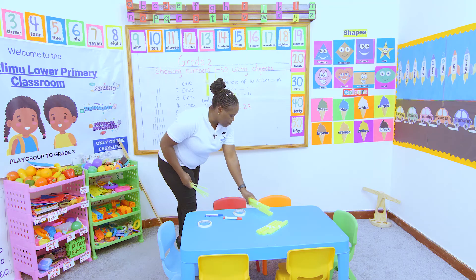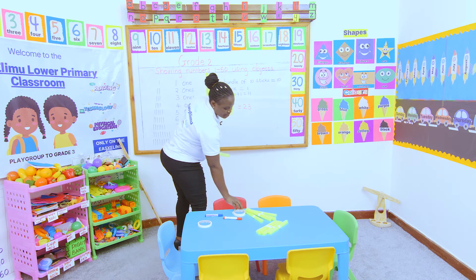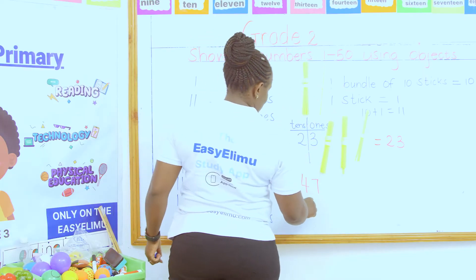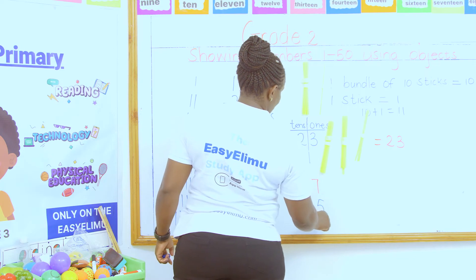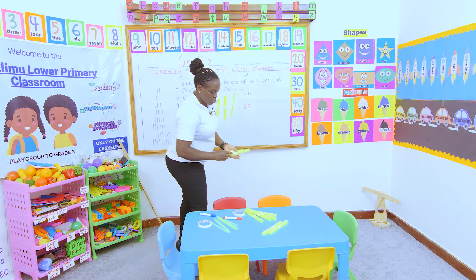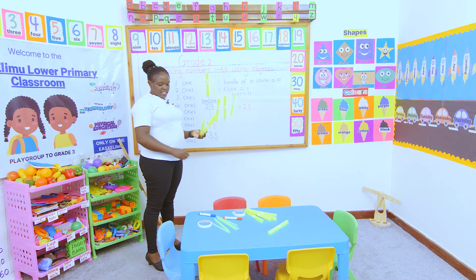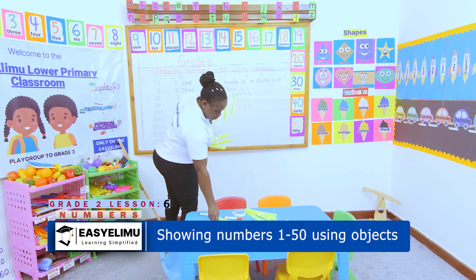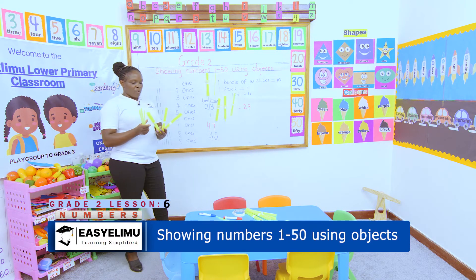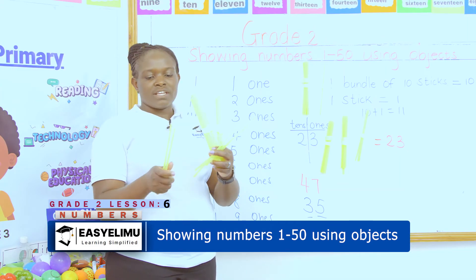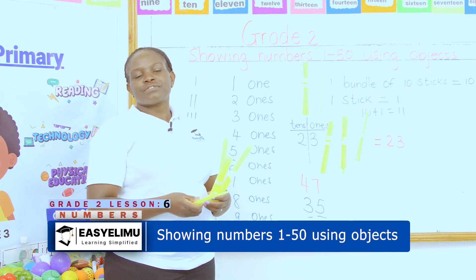If I'm told to make 35: 35 has three tens and five ones. So I have one, two, three — these are three tens. How many ones? One, two, three, four, five. Let's check: ten, twenty, thirty, thirty-one, thirty-two, thirty-three, thirty-four, thirty-five. Yes, that is 35.